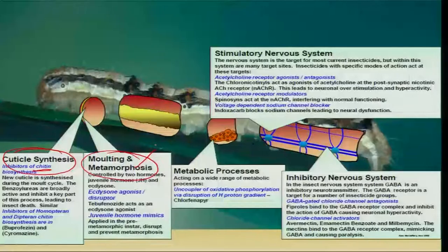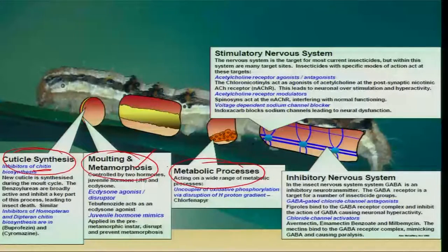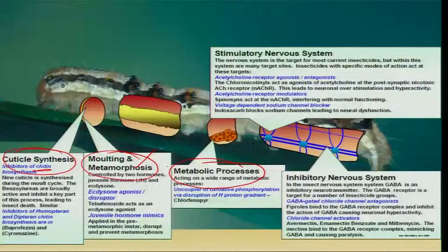The third group of insecticides mainly interferes with the metabolic process within the insect. Various enzymes required for digestion of ingested material are affected due to inhibition of enzymes during metabolic activity, and this also leads to paralysis and death of the insect.